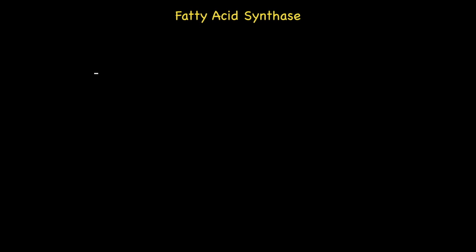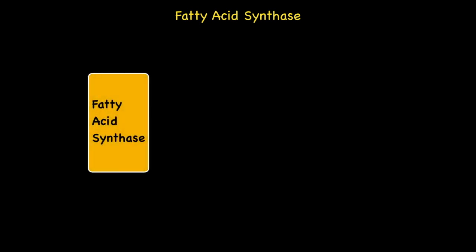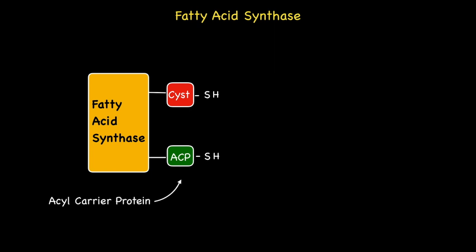Central to chain elongation and fatty acid synthesis is the multi-enzyme complex known as fatty acid synthase, which is illustrated here. There are two key players within the complex, and these include acyl carrier protein, abbreviated to ACP, and the amino acid cysteine. Both ACP and cysteine possess a thio functional group, circled in white. As you will soon see, the presence of these two thio functional groups is crucial to the manufacturing process.